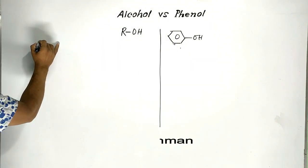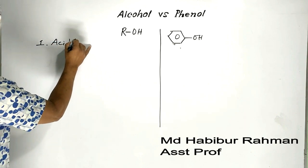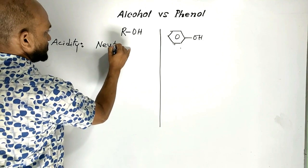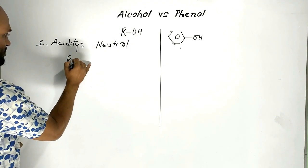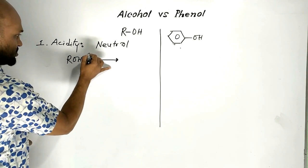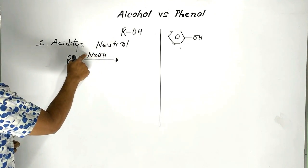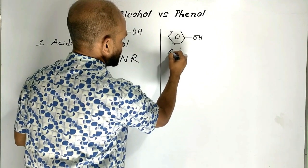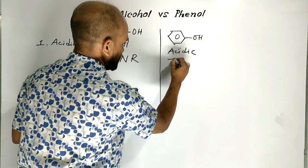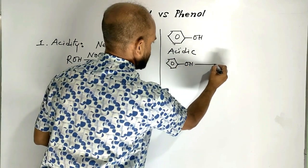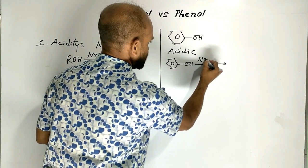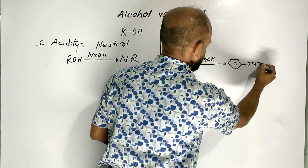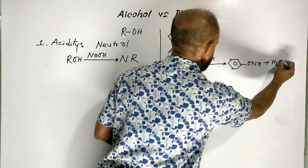Point number one: acidity. Alcohol is not acidic — it is actually neutral. That is why alcohol doesn't undergo reaction with sodium hydroxide base — no reaction. But phenol is a bit acidic in nature. That is why phenol reacts with sodium hydroxide base and forms salt and water — specifically sodium phenoxide and water.